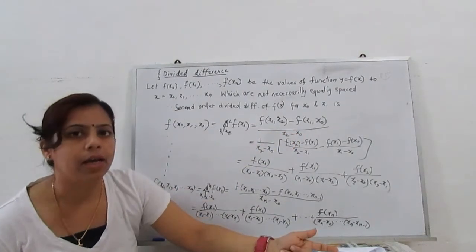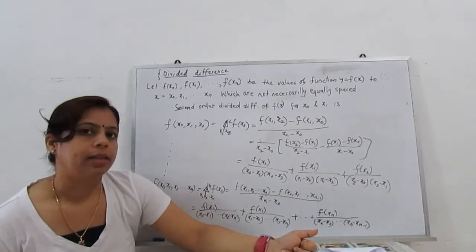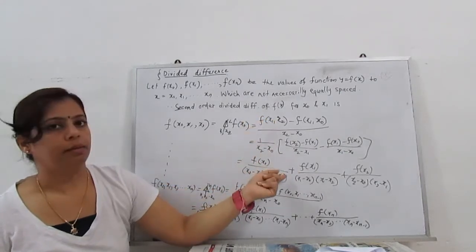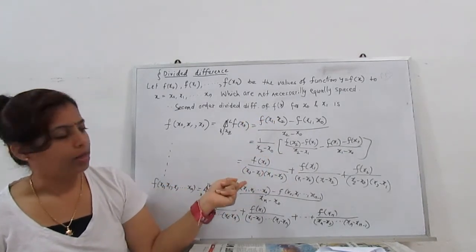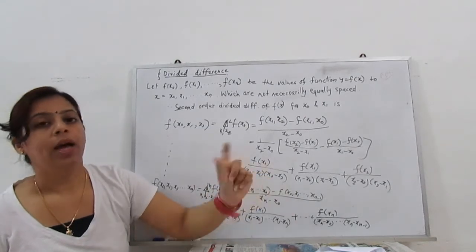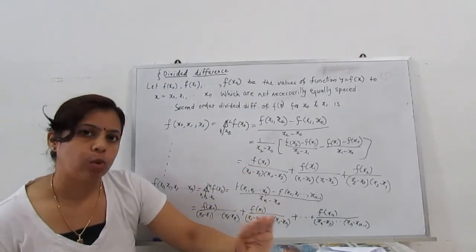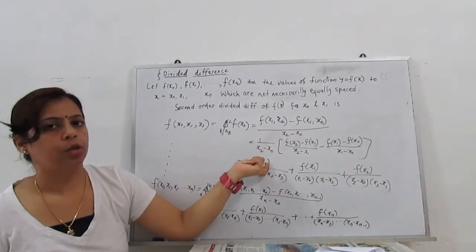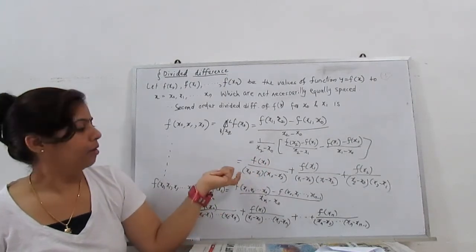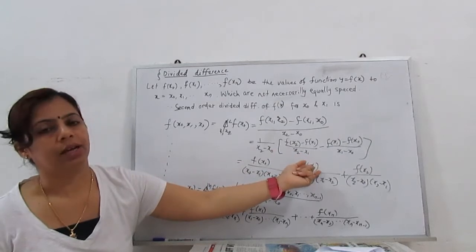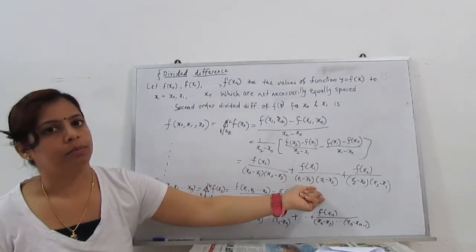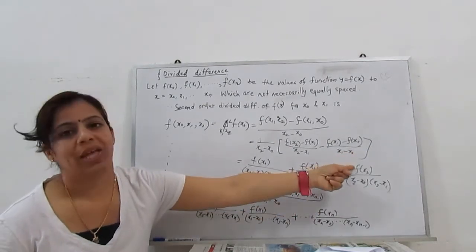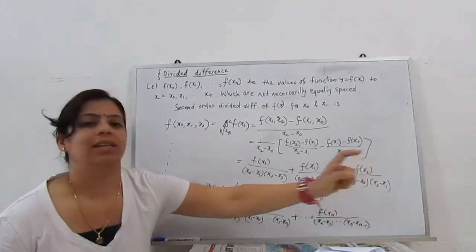When we rearrange, an easy form to remember is: f(x0) / ((x0 - x1)(x0 - x2)) — the x0 minus x0 term is omitted. Then plus f(x1) / ((x1 - x0)(x1 - x2)), since x1 minus x1 does not appear. And the next term is f(x2) / ((x2 - x0)(x2 - x1)).